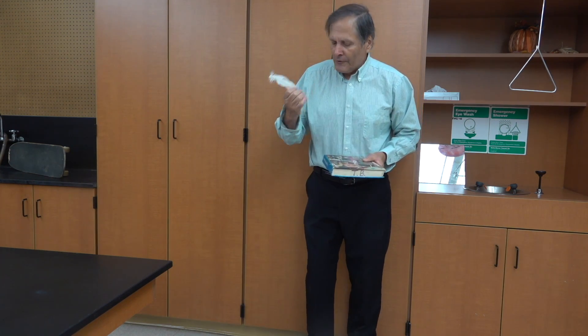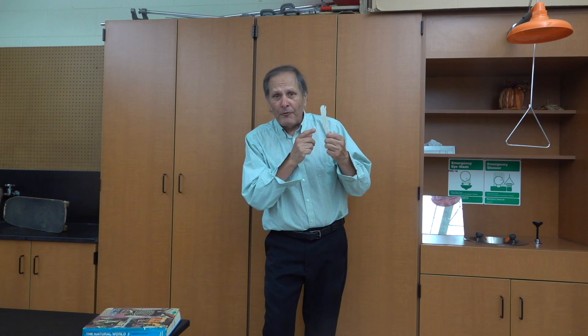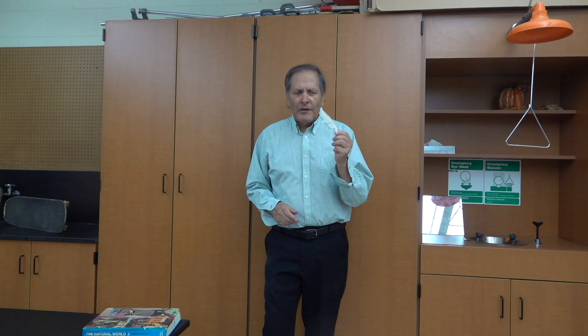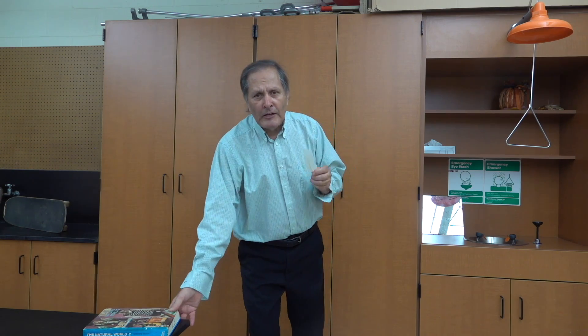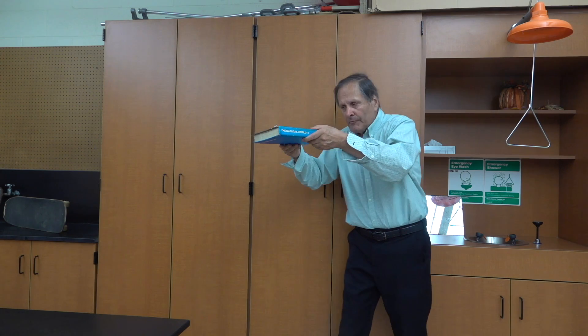But under the right conditions we can get this feather and book to accelerate together. Now how do we do that? The answer is to keep air from hitting the feather and reaching the terminal velocity. Now there's a couple of different ways that this can happen, but a simple way of doing it is to block the air by placing it on top of the book and then dropping them together.